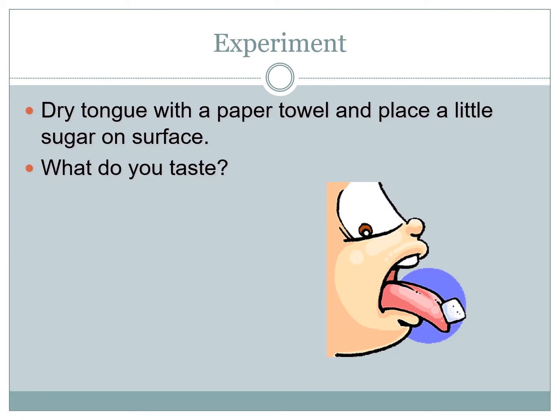Here's a simple experiment: next time you're around sugar, get a paper towel and dry the surface of your tongue first — nice and dry, no saliva — and put the sugar on the edge of your tongue. In the absence of saliva, you actually won't be able to taste anything at all. Before the chemical can stimulate your taste buds, it must be dissolved in the saliva, meaning saliva is absolutely vital to your taste senses.